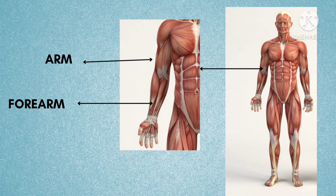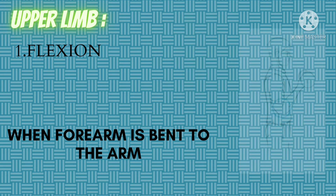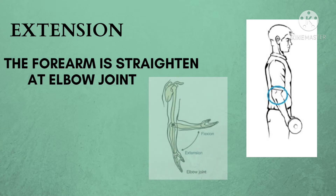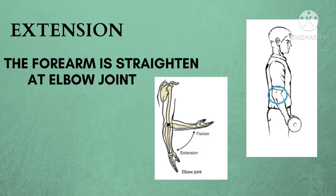Now let's start with the first type of movement: flexion and extension. As you can see in the diagram, the person is doing exercise and pulling the forearm upward — that bending of the arm towards the forearm is called flexion. When a person is straightening his arm away from the forearm, that is called extension. Flexion and extension are opposite movements. Flexion is done by the flexor muscles and extension by the extensor muscles.